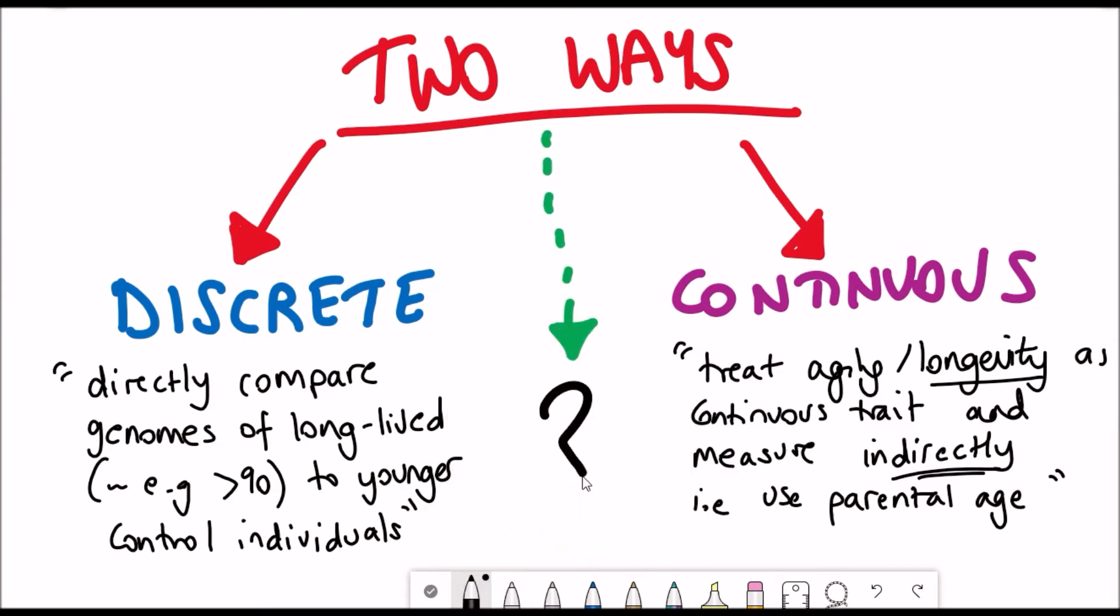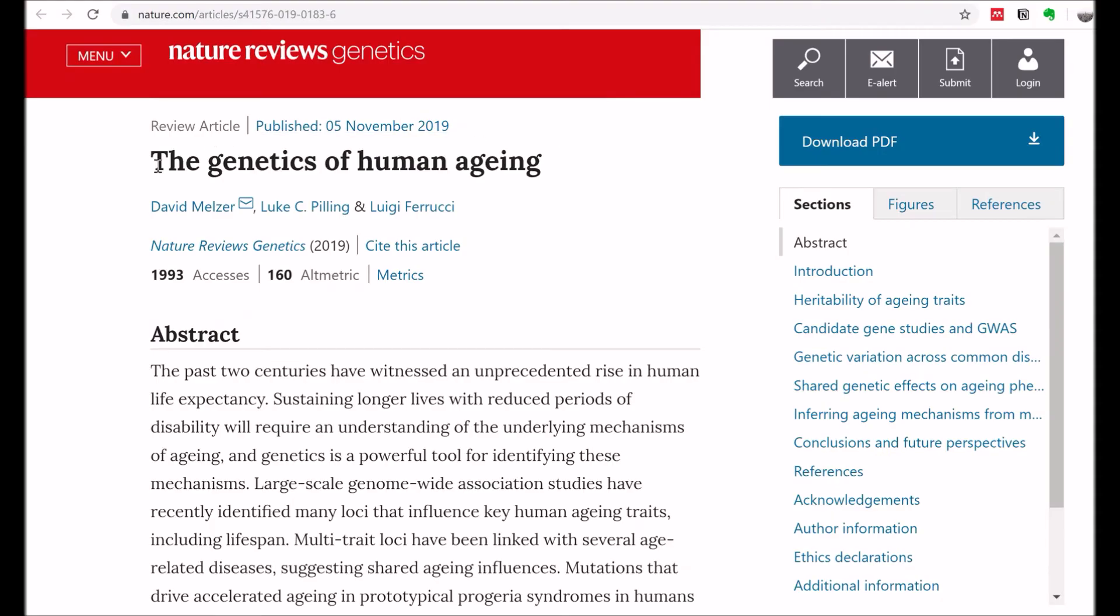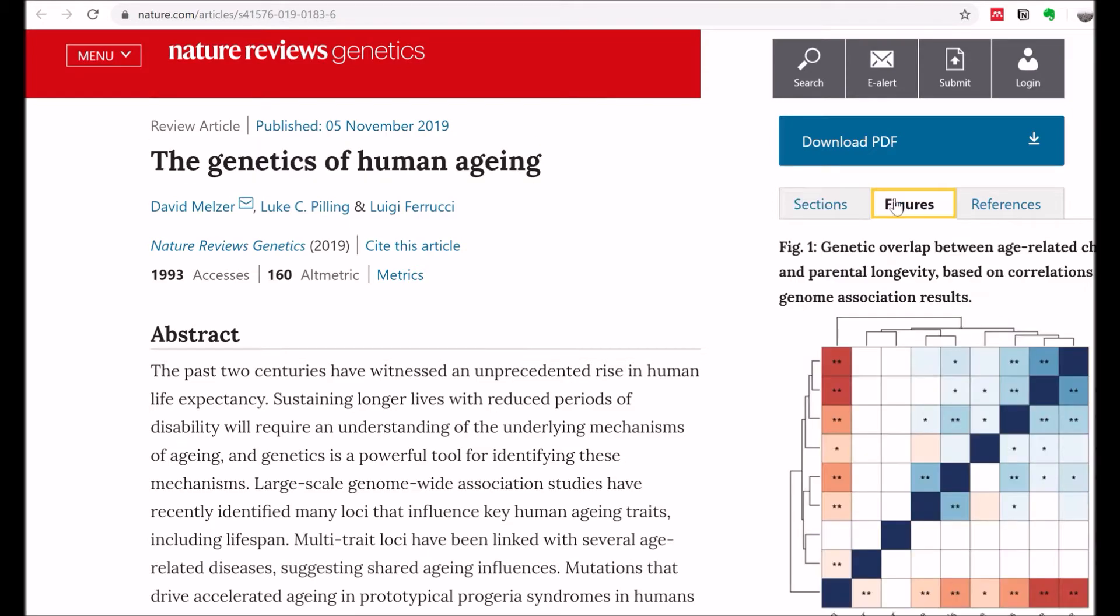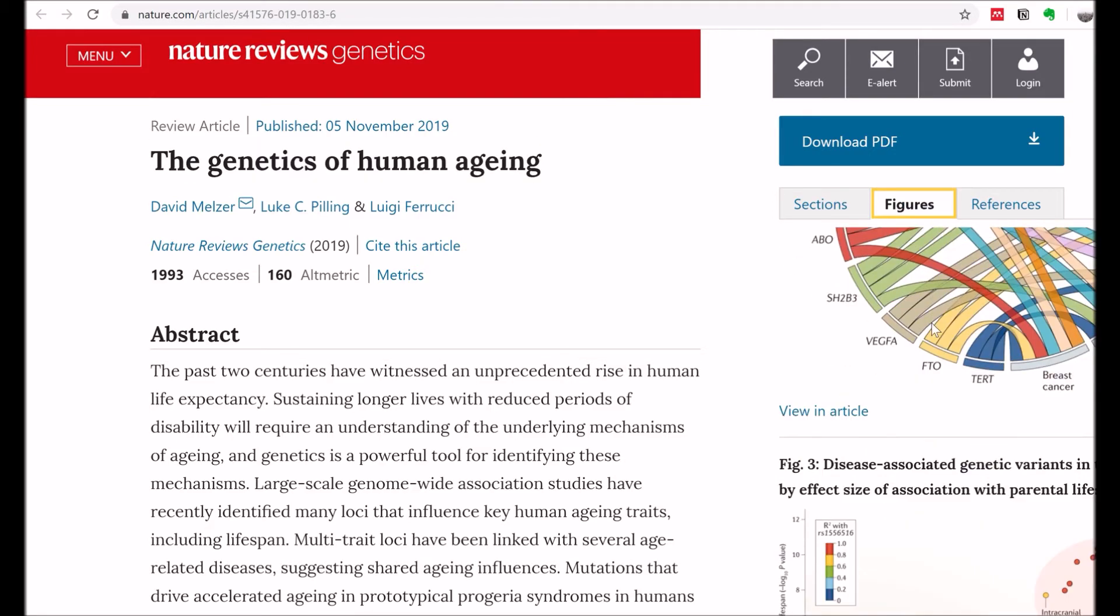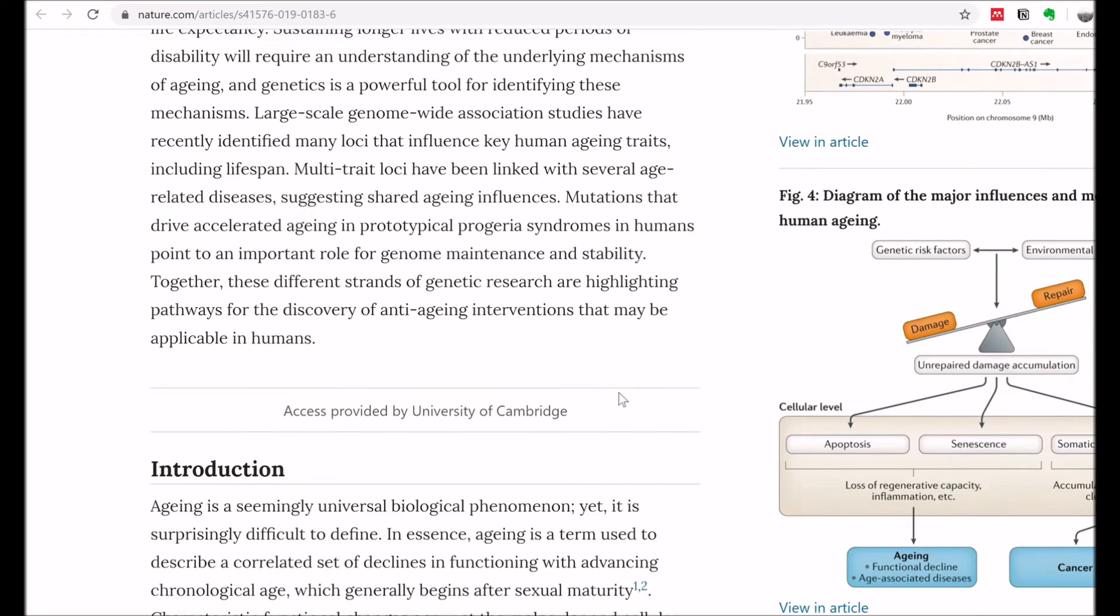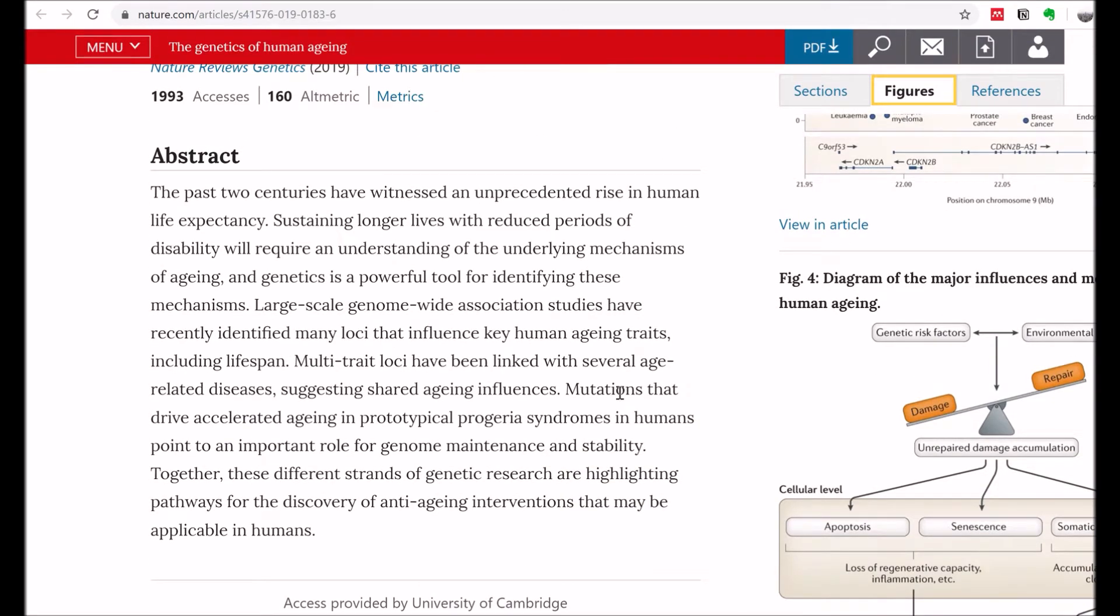So how else can you analyze the genetic variation linked to aging? What you can do, as described in this Nature Review paper, is look at shared genetic effects on different age-associated diseases.